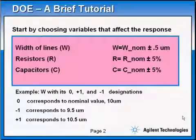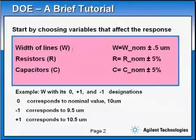Here is a brief tutorial on DOE. Let's say we have a design and in this design we choose three variables. In this case I choose a microstrip width of lines W, resistor R, and capacitor C. The three variables have nominal values and with process variation they change plus or minus. For the resistor and capacitor plus or minus five percent, and for the width of the line it changes plus or minus half a micron.